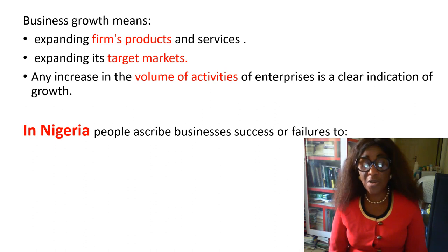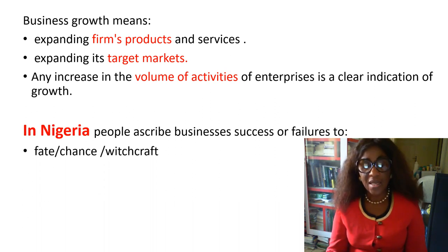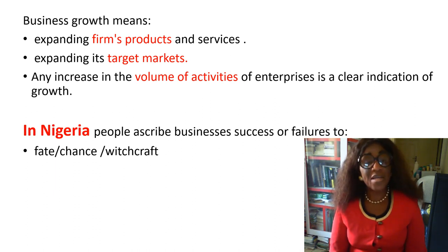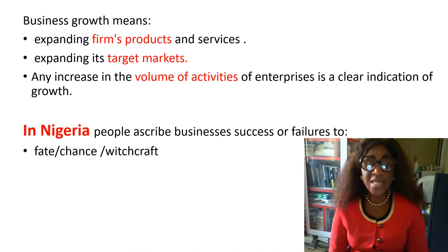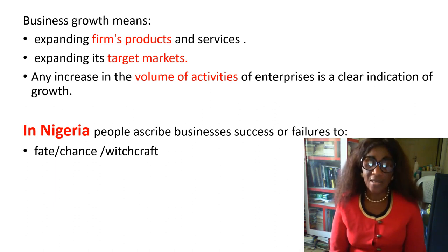In Nigeria, people ascribe business success or failure to all kinds of things — some ascribe it to faith, some to chance, or even witchcraft. If the business is not doing well and not growing, they say it's somebody that tied them down. You hear such remarks about witchcraft and tying down.